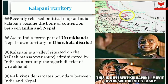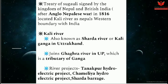Remember, the Kali river demarcates the boundary between India and Nepal. During British times, the Treaty of Sugauli was signed by the Kingdom of Nepal and British India after the Anglo-Nepali War in 1816, which located the Kali river as Nepal's western boundary with India.